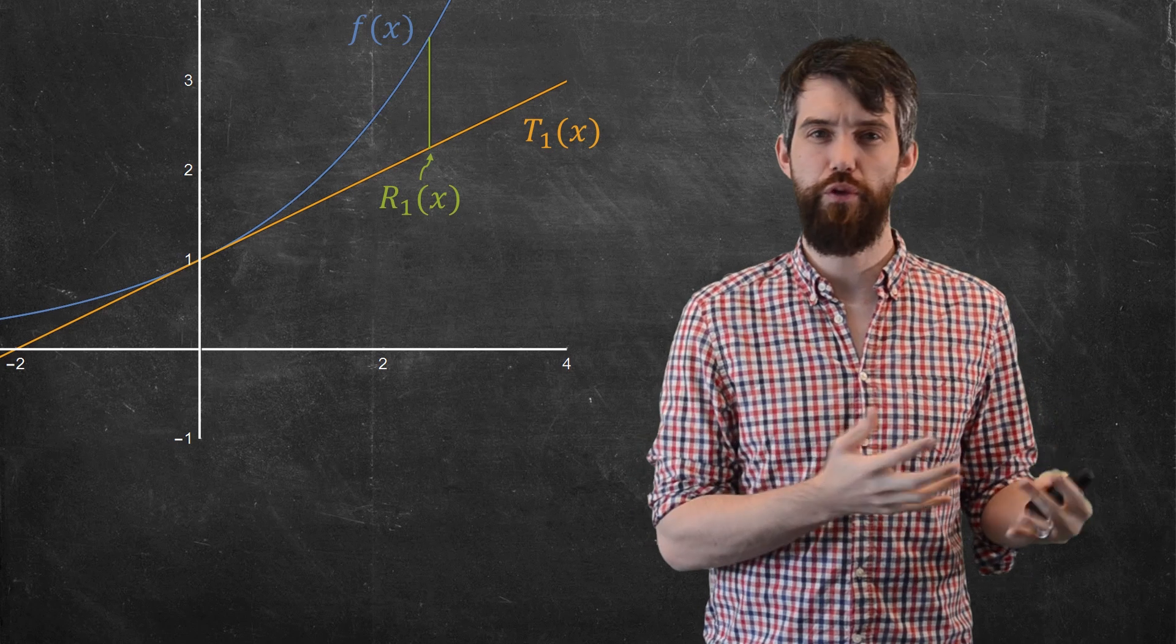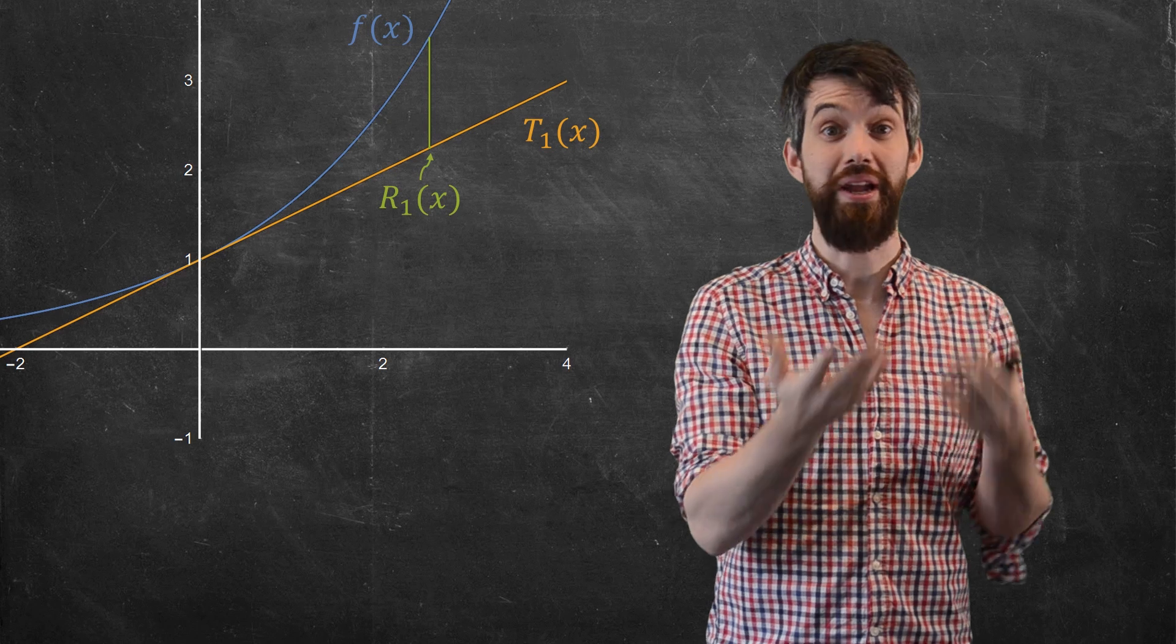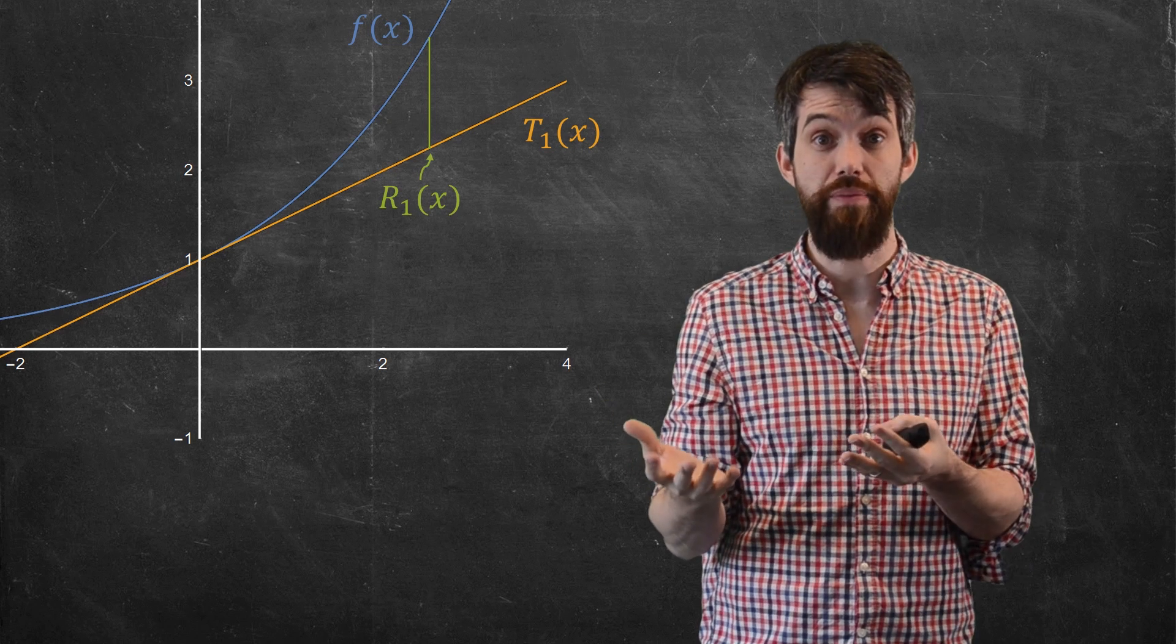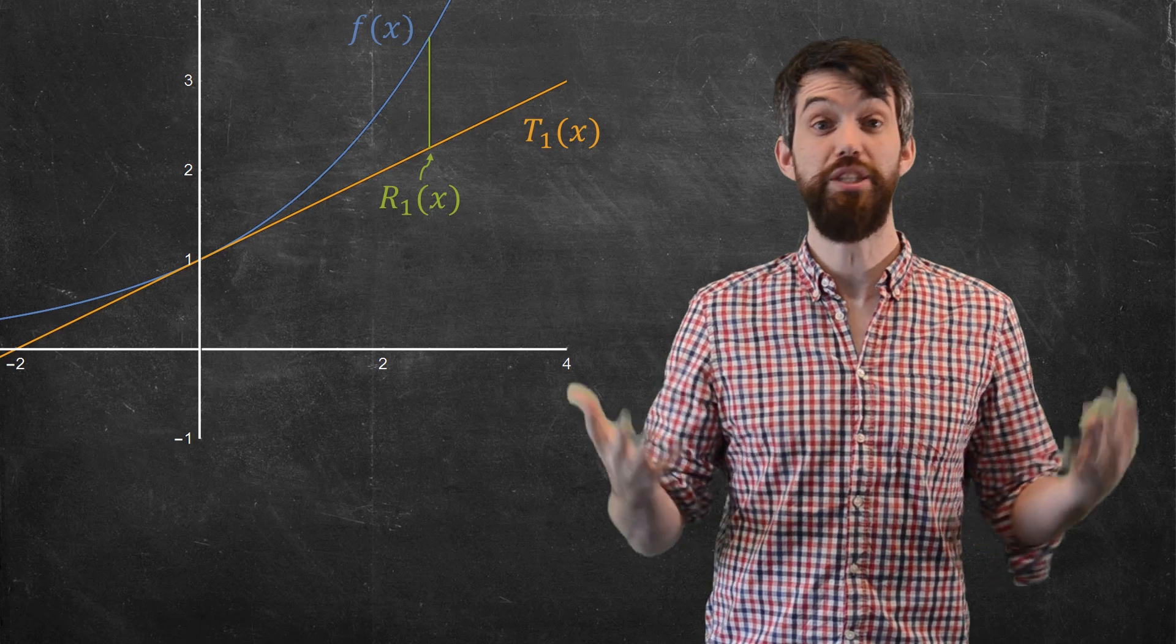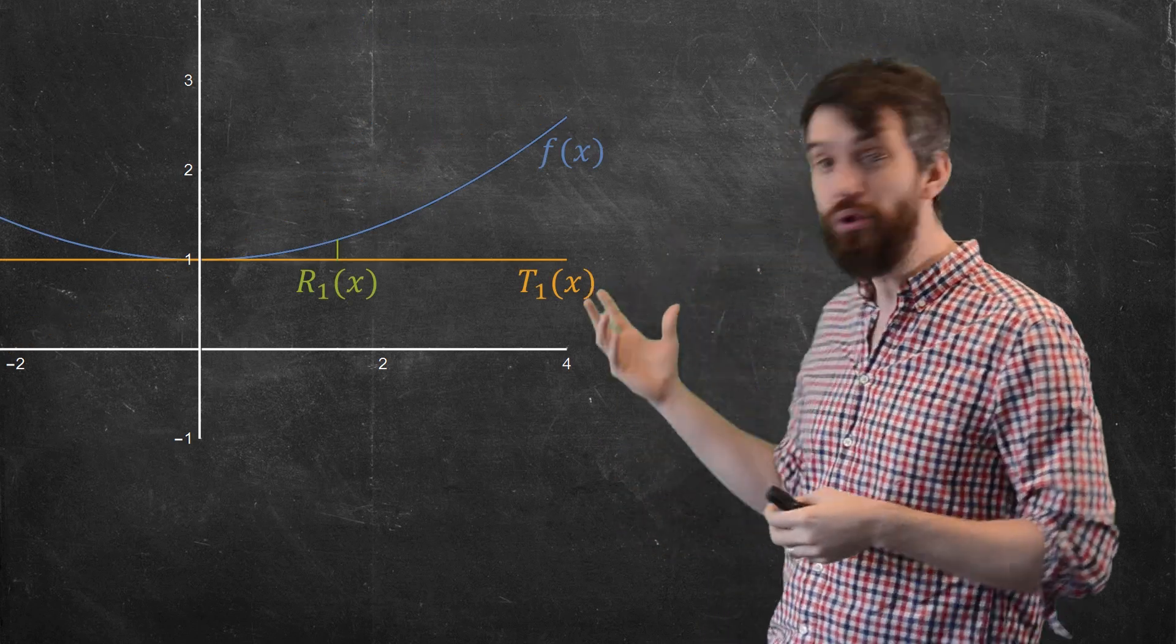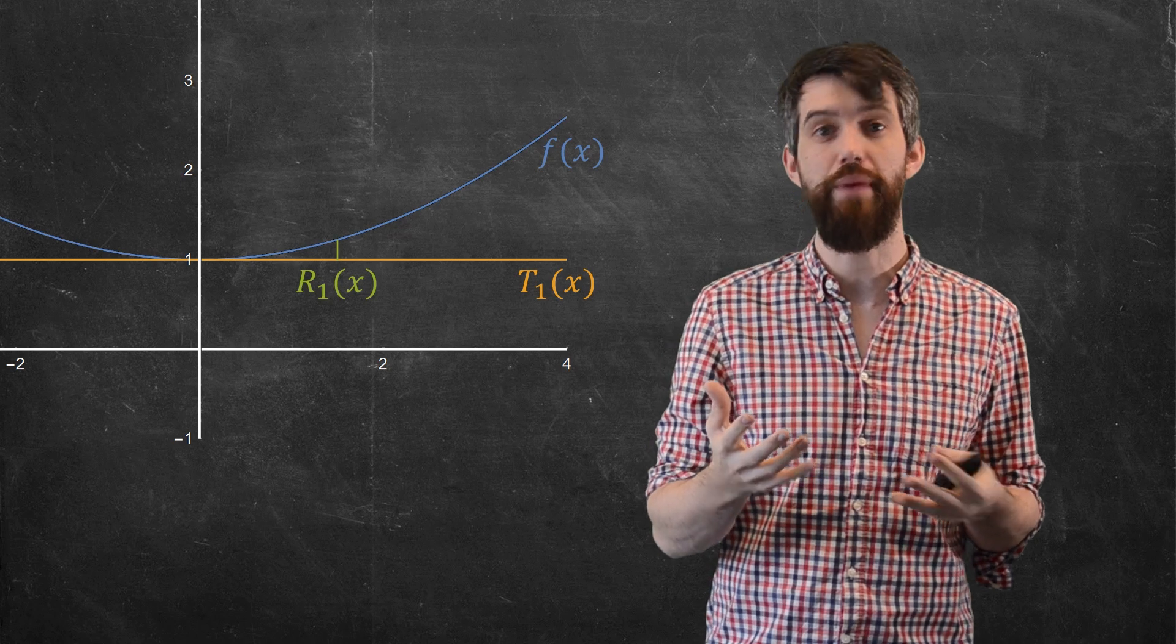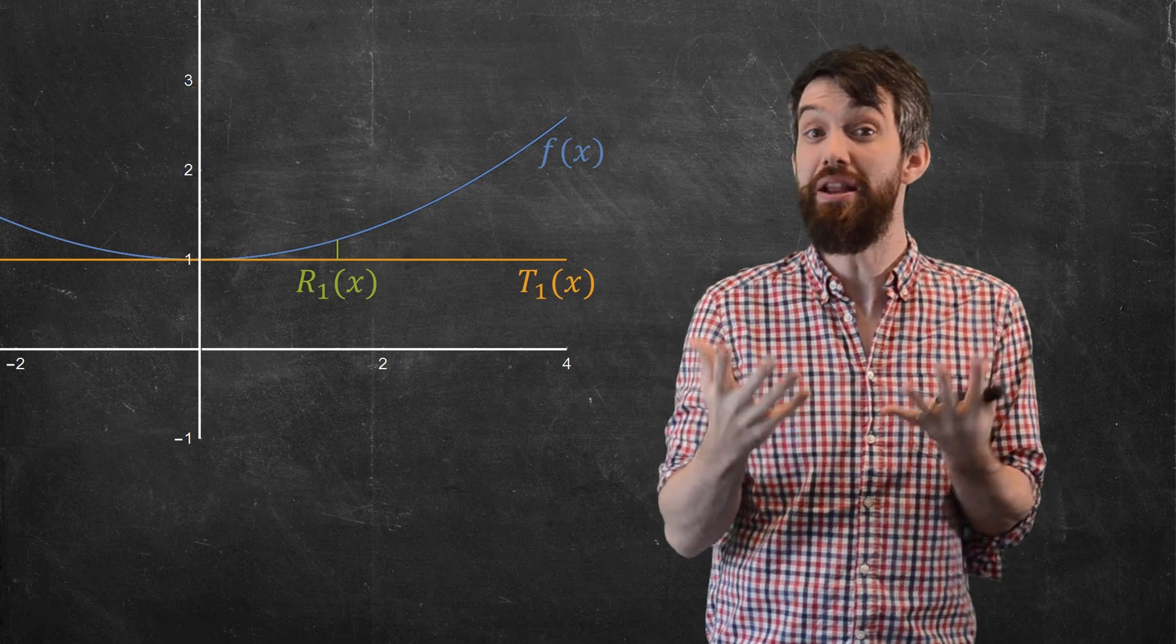So whatever my formula for the remainder is, it better depend on the difference between x and a. It better depend on the magnitude of |x - a|. But what else does my remainder depend on? I've put up a new f of x, and a new linear approximation, a new T1, and a new remainder. Now we already know that as I change the x values, my remainder is going to change.